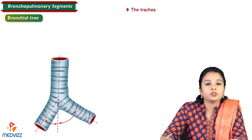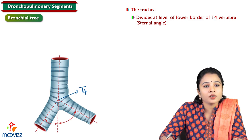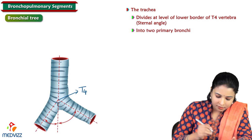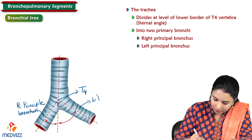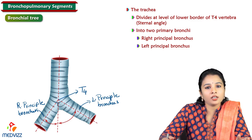Starting with the first part of the bronchial tree — the trachea. The trachea divides at the level of the fourth thoracic vertebra, known as the sternal angle or Lewis angle, into two primary principal bronchi: the right and left principal bronchus.